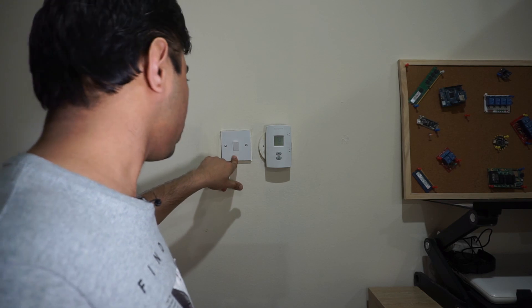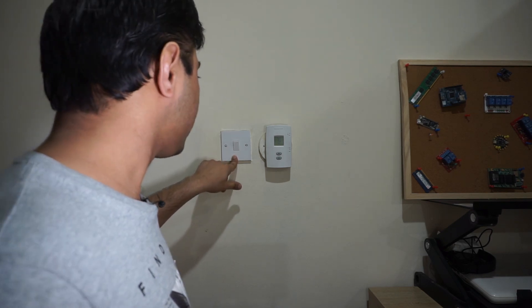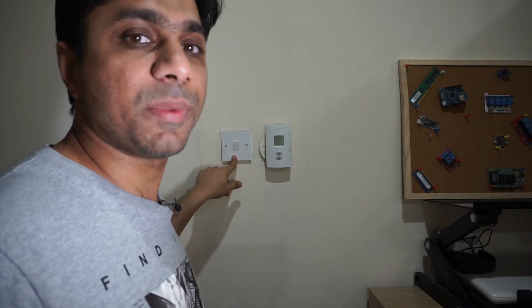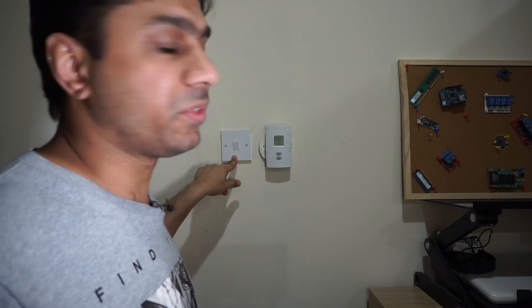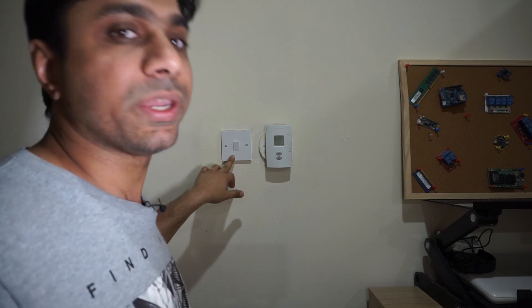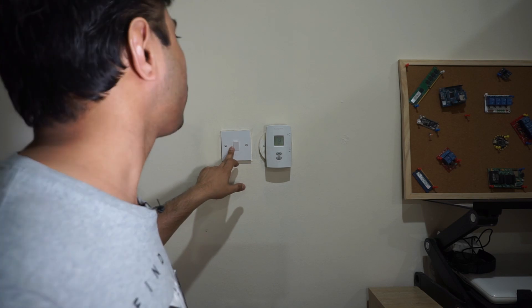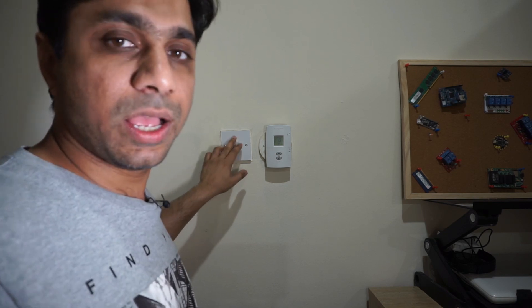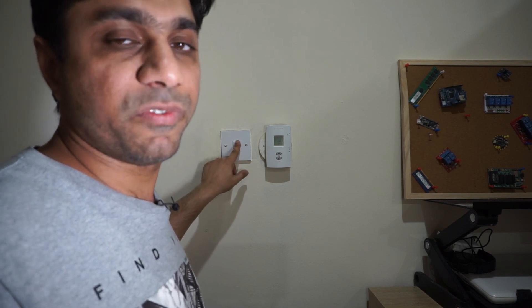So this is the other switch box. This is a two-way switch which is close to the door, and the connections to this switch is coming from NO and NC of the relay and going to L1 and L2. Common of this one is going to the bulb and we can control the bulb from here as well.